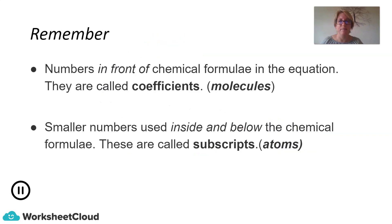To summarize: the numbers in front of chemical formulae are called coefficients and refer to the number of molecules in the reaction. The smaller numbers inside and below the formula are called subscripts and refer to the number of atoms. It is very important that you understand this before moving on to tomorrow's lesson, which will be all about balancing equations.